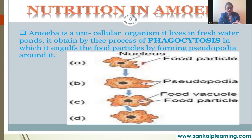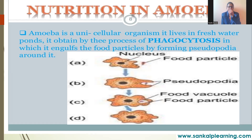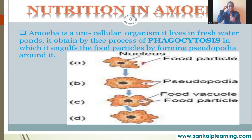The type of nutrition in amoeba is holozoic, meaning food is taken inside and digestion, absorption, and assimilation all happen inside the body. There are five steps in nutrition: ingestion — taking food inside the body; digestion — breaking down larger food particles into smaller particles; absorption — the broken down particles are absorbed.